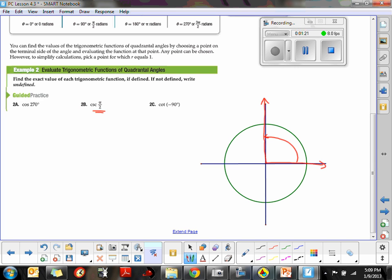Again, make sure that you're using, for all quadrantal angles, a radius of 1, which means this ordered pair is then defined by (0, 1).